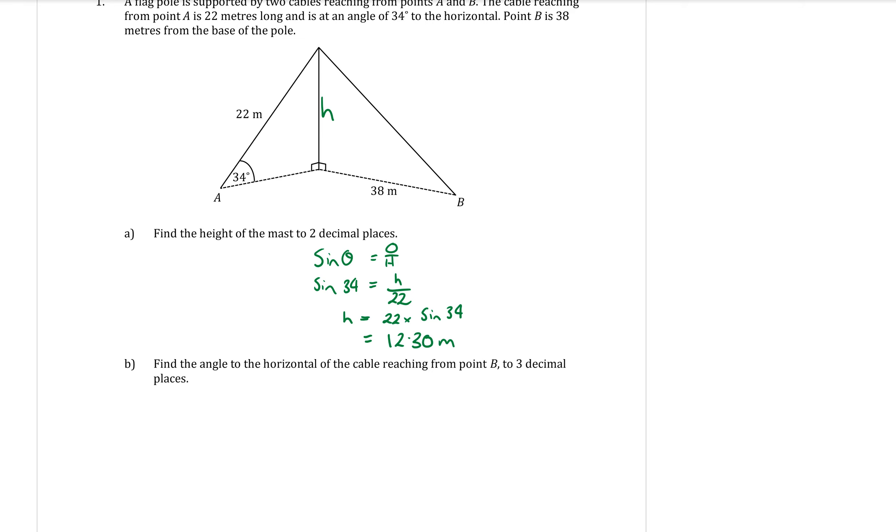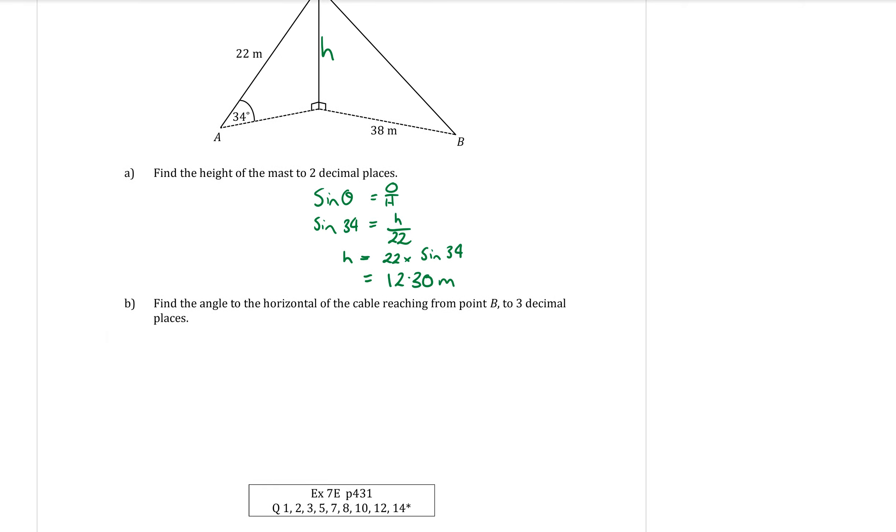Okay part B, find the angle to the horizontal of the cable reaching from point B. Okay that means I'm trying to find this angle in here. And we want to find it this time to three decimal places. Just to be tricky, they've changed the number of decimal places on us. Alright so we're using the second triangle, the triangle on the right now.